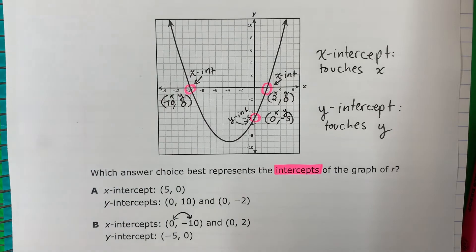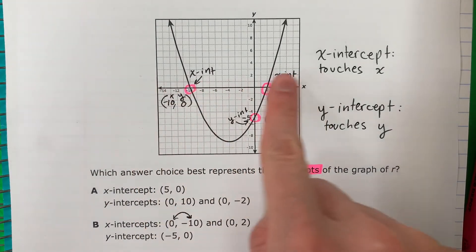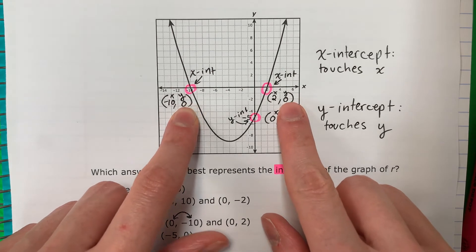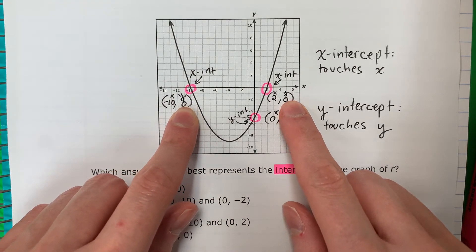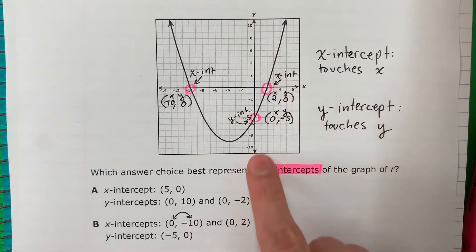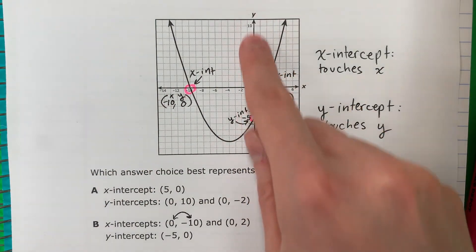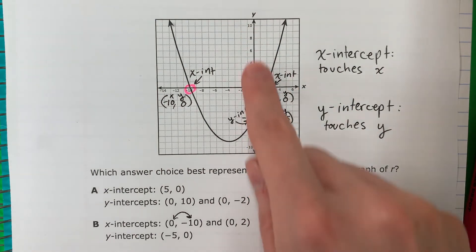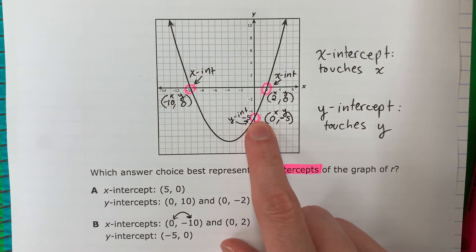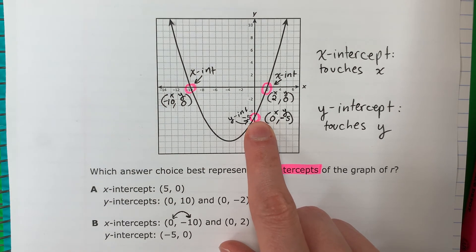So remember x-intercept, it's where it touches the x. Donde se toca el x. Also the y is always 0 for the x-intercept. También la y siempre es 0 por el x-intercept. Y-intercept is where it touches the y. El y-intercept es donde se toca la y. And for the y-intercept, the x is always 0. Y por el y-intercept, el x siempre es 0.